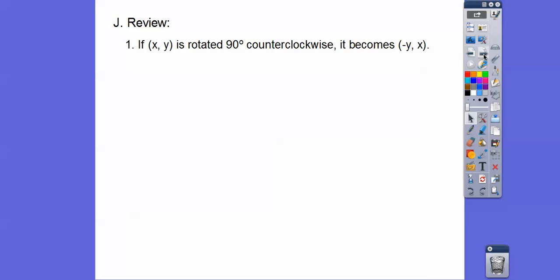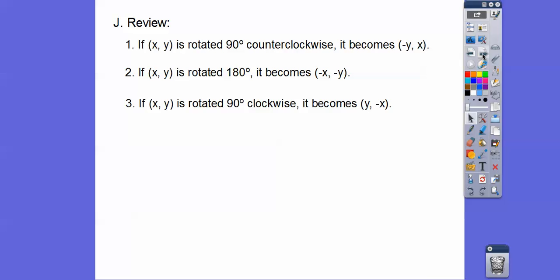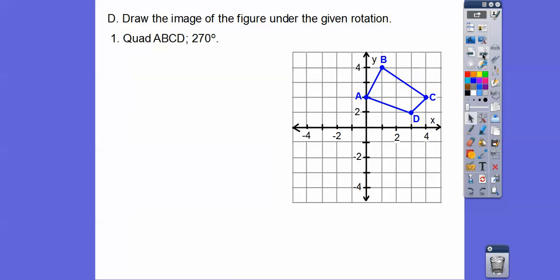Here's a summary of the rotation rules: if we take (x, y) and rotate it 90 degrees counterclockwise, it becomes (-y, x). If we take (x, y) and rotate it 180 degrees, it becomes (-x, -y). If we take (x, y) and rotate it 90 degrees clockwise, it becomes (y, -x). And if we rotate it 360 degrees, it takes us right back to the same position.